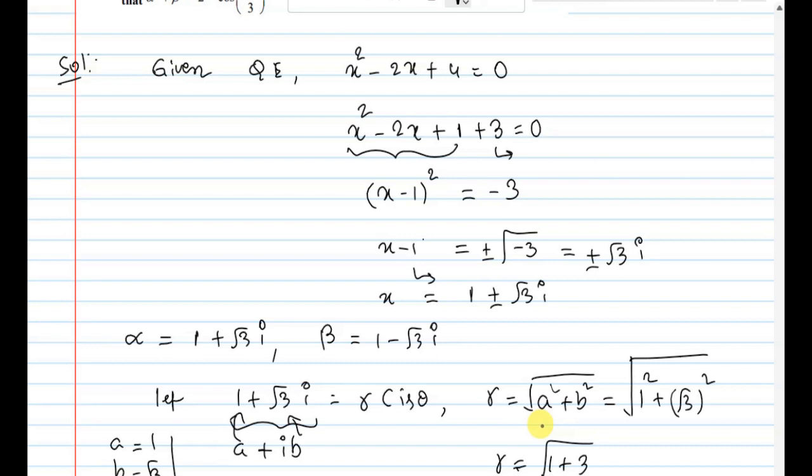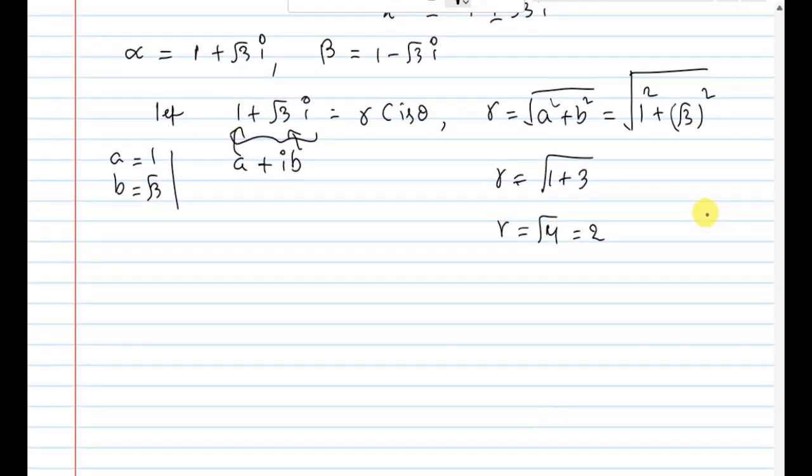Now theta value calculation. Theta equal to tan inverse b by a. b is root 3, a is 1. Theta value equals tan inverse root 3, which is 60 degrees or pi by 3.